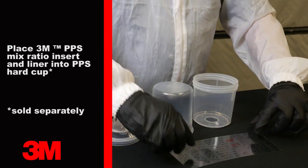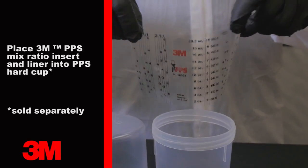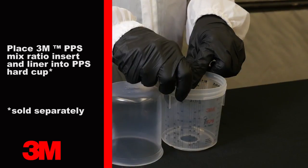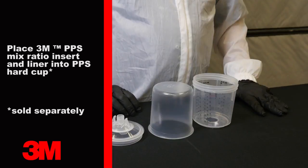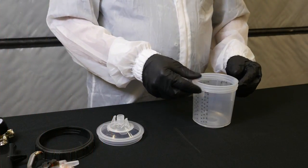The first step to using PPS is to assemble your PPS cup. Start by putting the mix ratio insert into the PPS hard cup. Next, place the PPS liner into the hard cup. You can now mix your paint directly in the PPS liner.